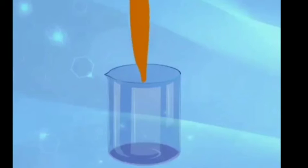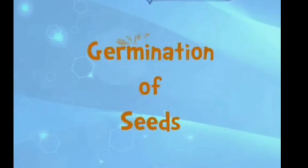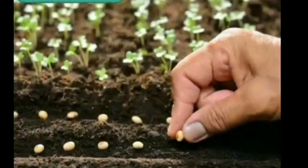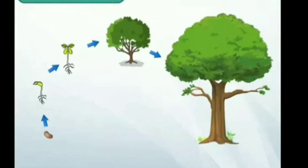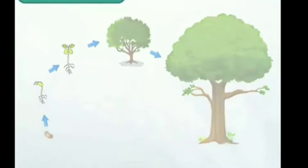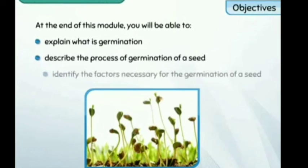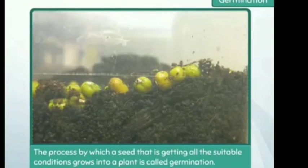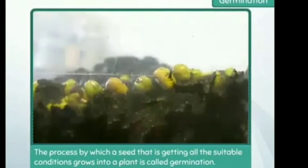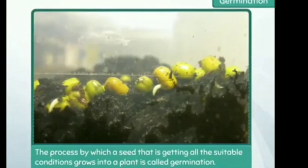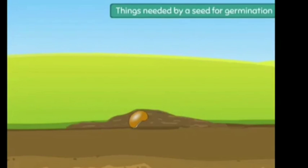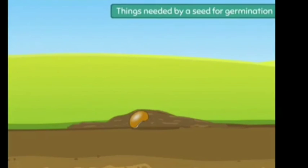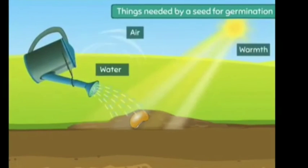Next topic: Germination. The process by which a seed, getting all the suitable conditions, grows into a plant is called germination. When we say suitable conditions, that means all the things needed by a seed to germinate — water, warmth, and air.